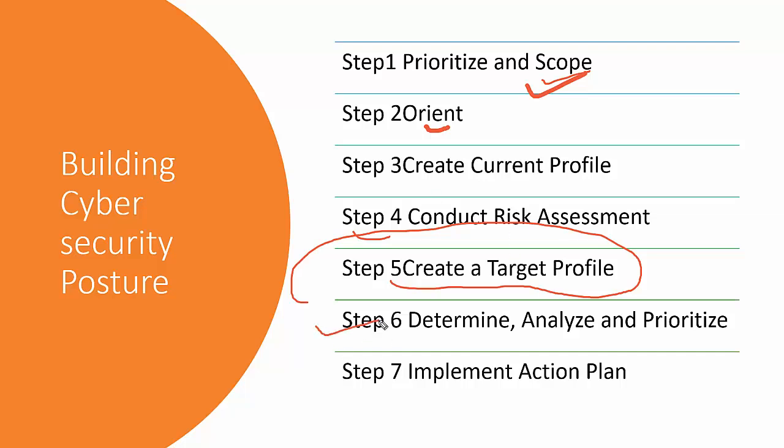Step 6 is a Gap Analysis. The organization conducts a gap analysis to determine opportunities for improvement by overlaying the current state profile with the target state profile. From this we get a profile gap assessment showing where we are and where we need to get to. We prioritize the action plan, document risk acceptance decisions, and set performance and conformance targets.